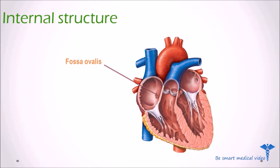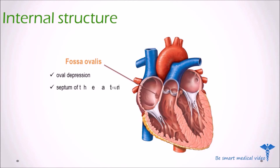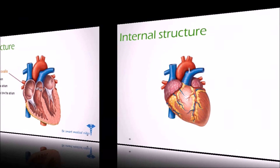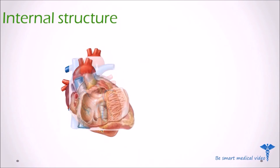Next is the fossa ovalis. The fossa ovalis is an oval depression located in the atrium of the heart, on the lower part of the septum — the wall between the right and left atrium. During fetal development, in the embryonic heart, the foramen ovale allows blood to pass from the right atrium to the left atrium.